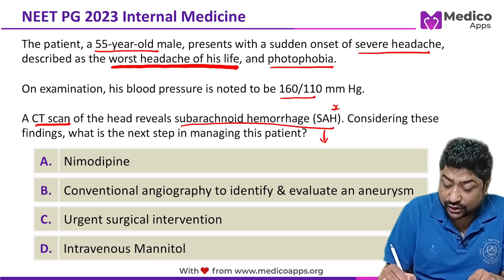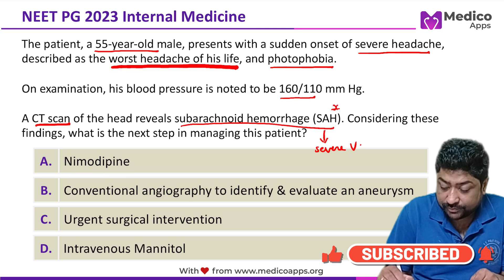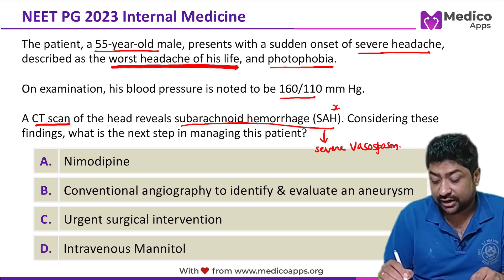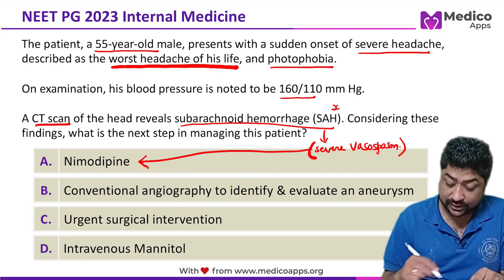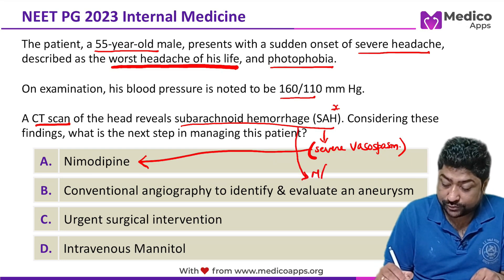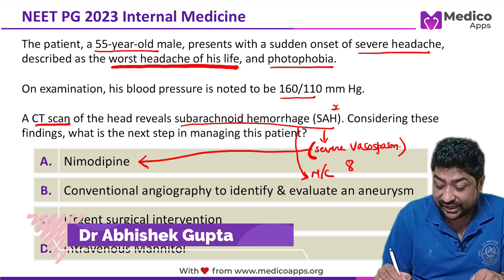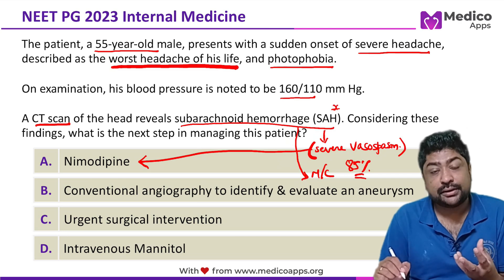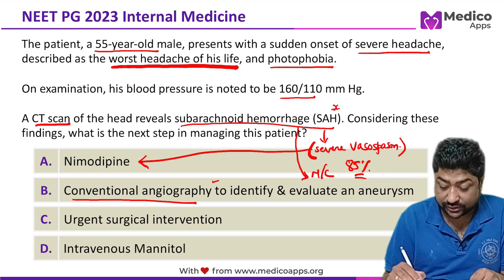In SAH, one of the most important causes of mortality is severe vasospasm, and to counteract that we give nimodipine. Now option B — conventional angiography. The most common cause of SAH is rupture of an aneurysm, especially a berry aneurysm, accounting for almost 85% of primary cases. To evaluate the source of bleeding, the extent of bleeding, and the ruptured aneurysm, we perform conventional angiography. So this option is also correct.